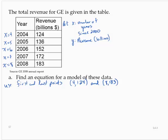So then we can find the slope. M would equal 183 minus 124 over 8 minus 4. 183 minus 124 is 59 over 4. And 59 divided by 4 is 14.75.